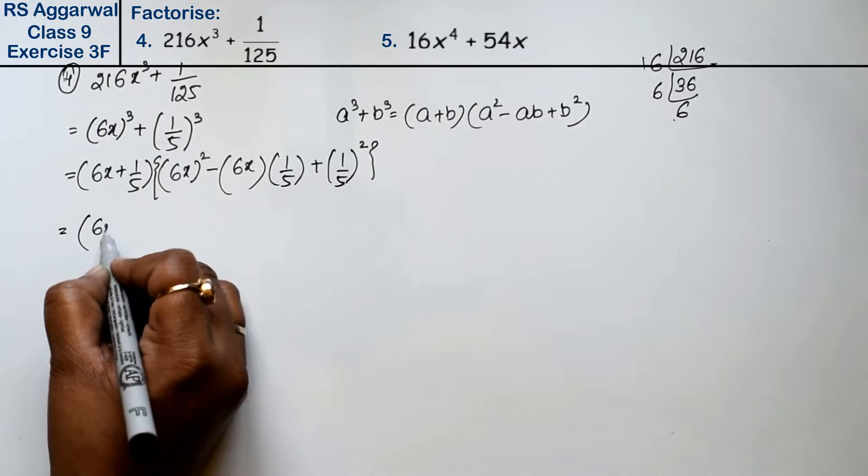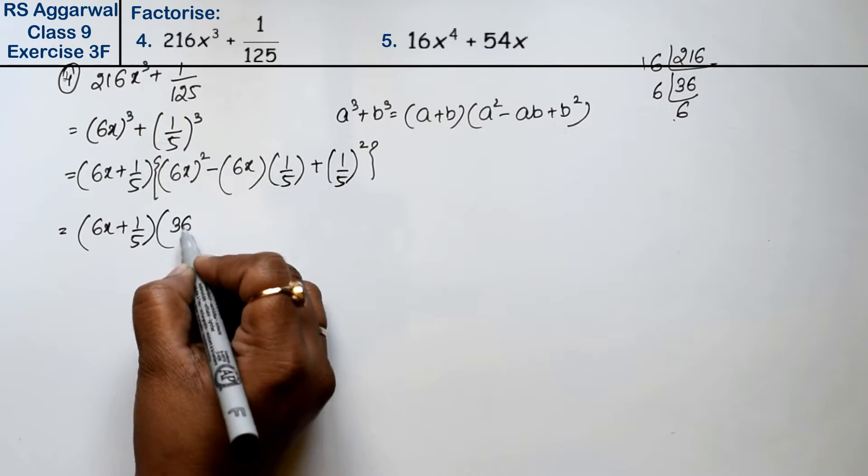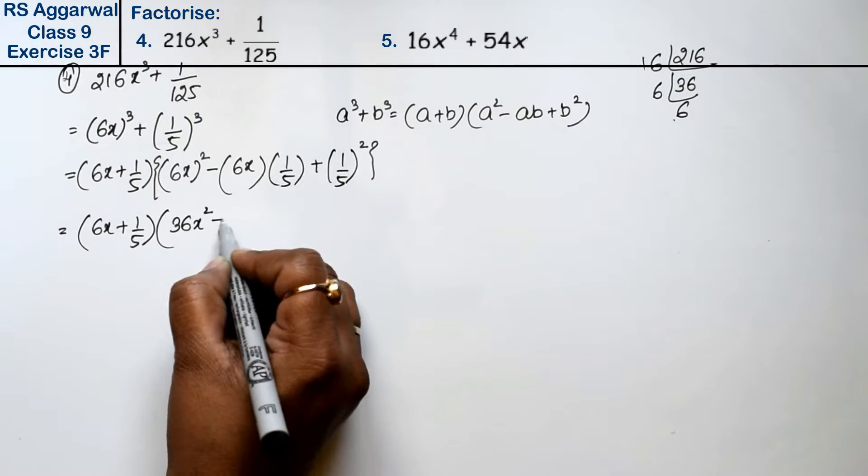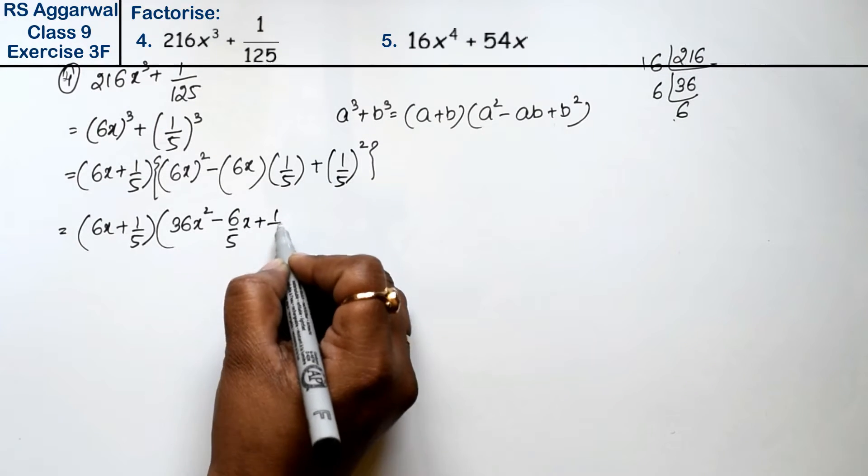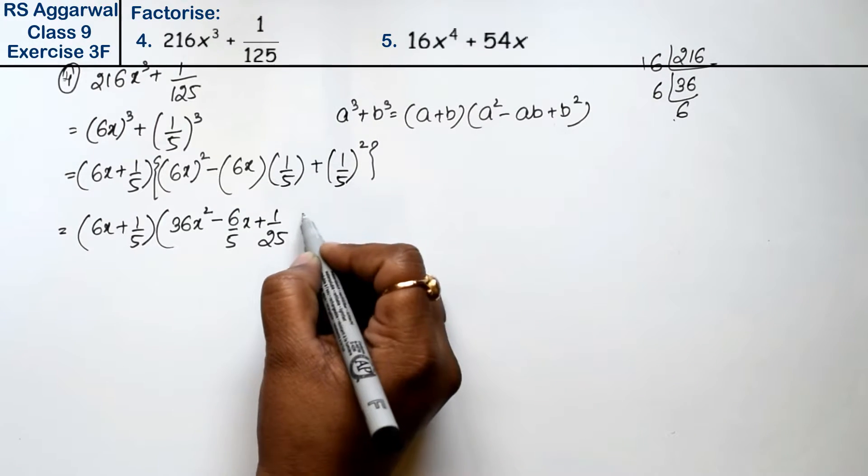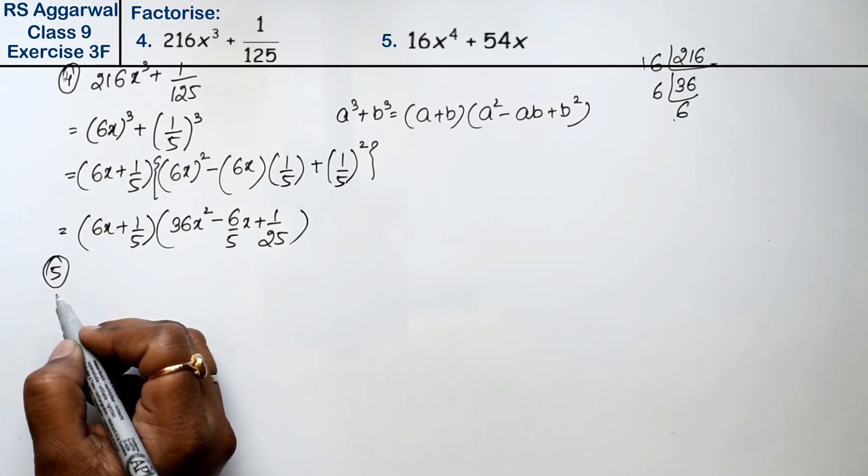So 6x plus 1 upon 5 times 36x square minus 6 upon 5x plus 1 upon 25 is the answer. Let's do question number 5.